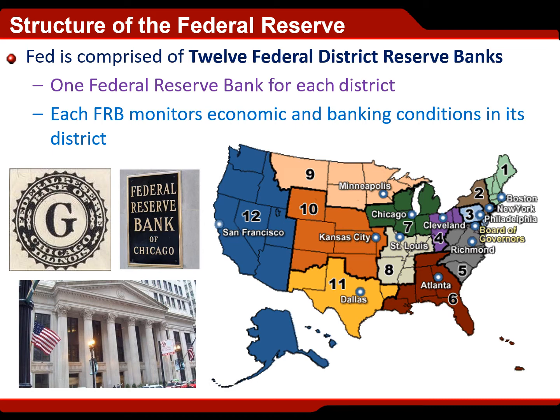Here's a cool trick: look on the face side of a dollar bill and you'll find a black spiky circle that says 'Federal Reserve Bank of' with a big letter in the middle. The one shown on screen is a G — G is Chicago, Illinois. Chicago is the seventh Federal Reserve District and the letter G is the seventh letter of the alphabet. That means the Chicago Fed ordered that dollar bill from the Treasury, it was delivered to the Chicago Fed, and the Chicago Fed put that dollar into circulation.